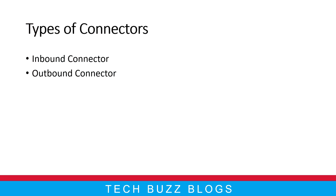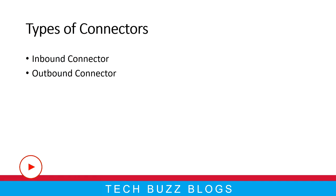So there are types of connectors. Majorly we have two types — one is inbound connectors and one is outbound connectors. What is an inbound connector? When some external system wants to communicate with your workflow, come into the workflow — that we call an inbound connector. The request is basically coming from outside into your system. So that is called an inbound connector.